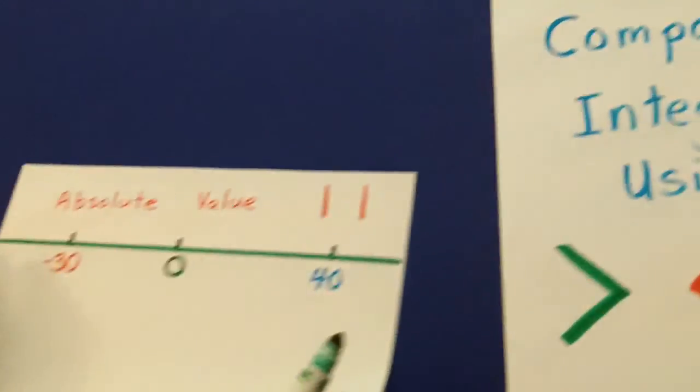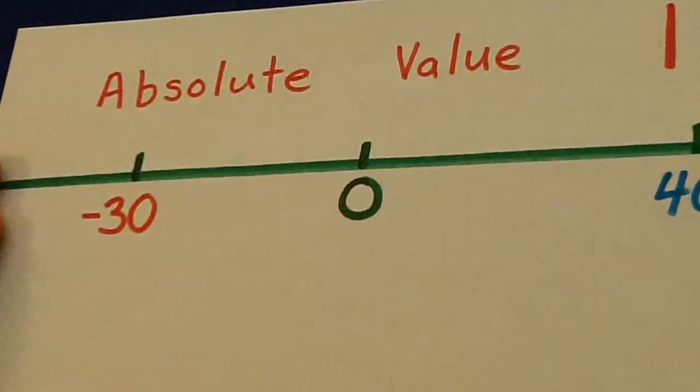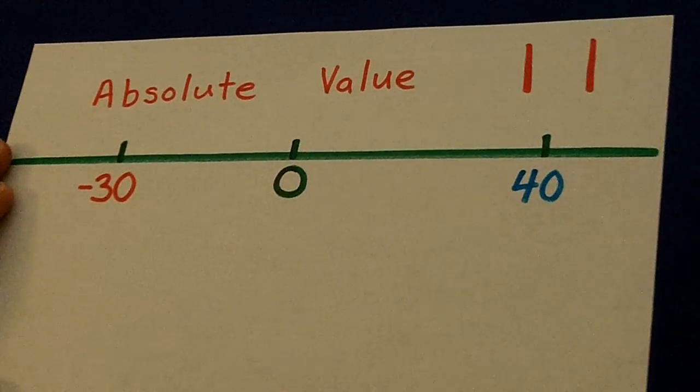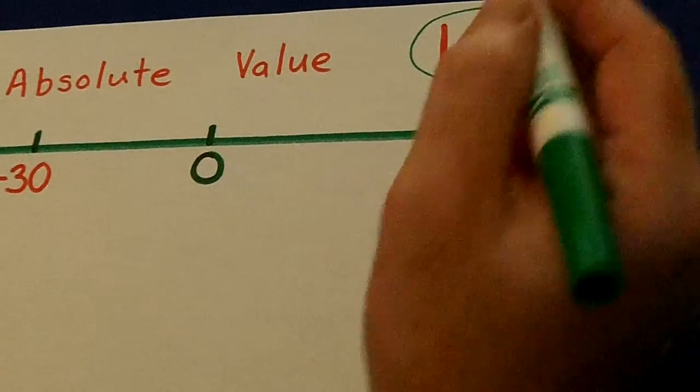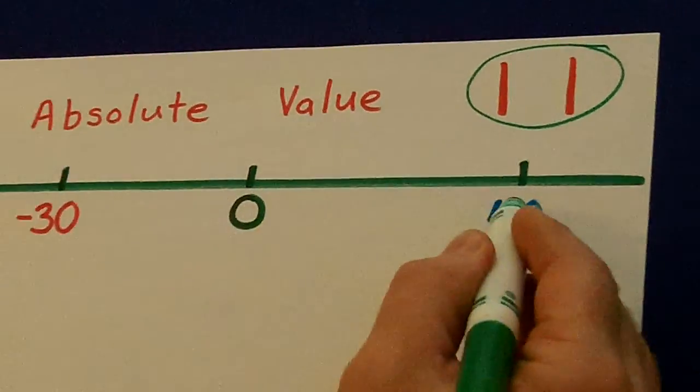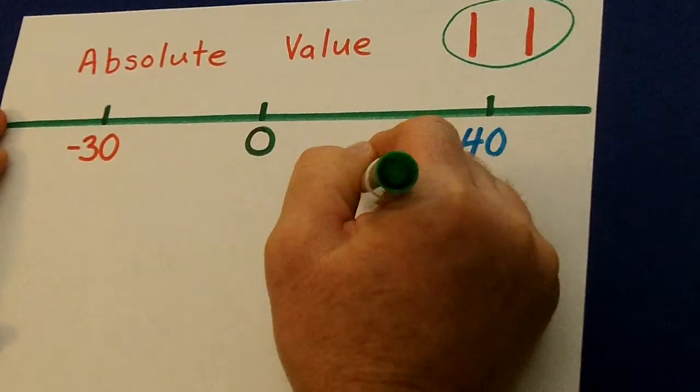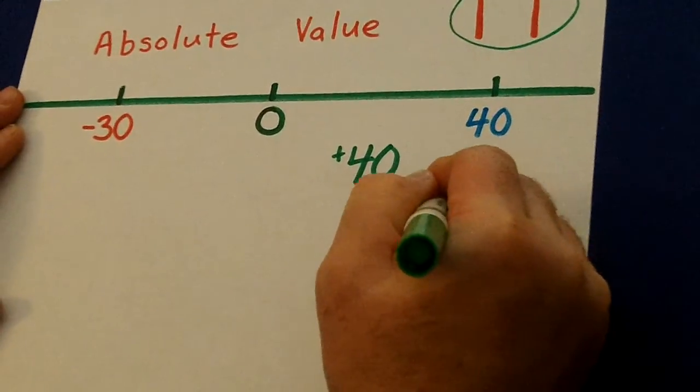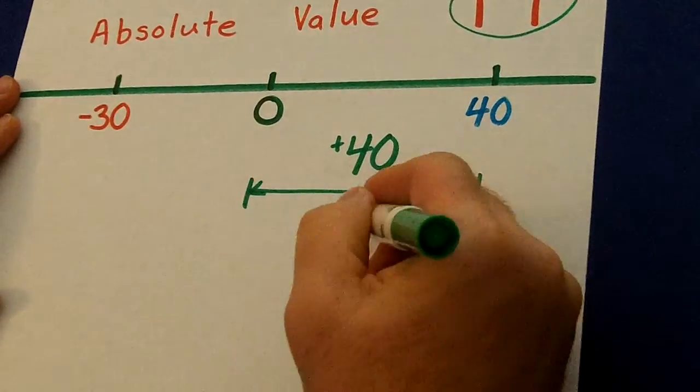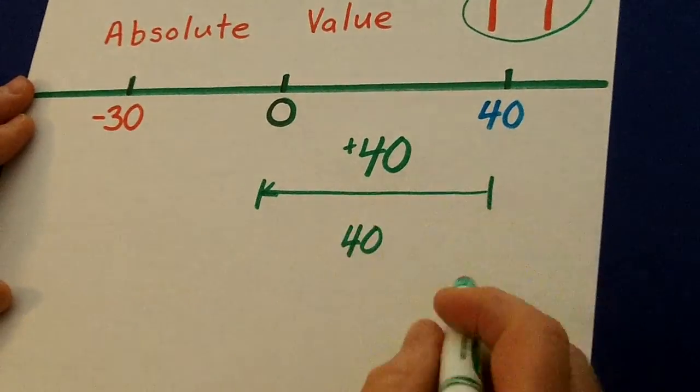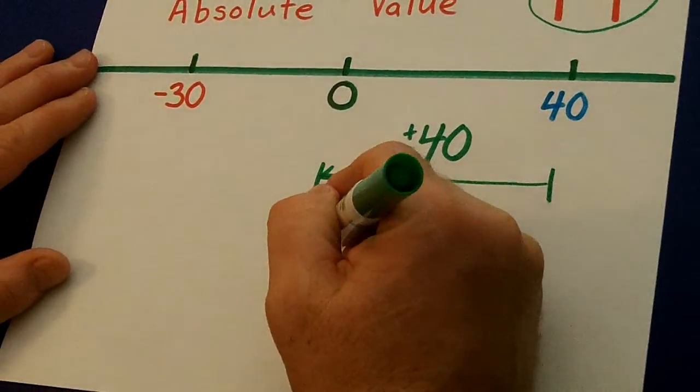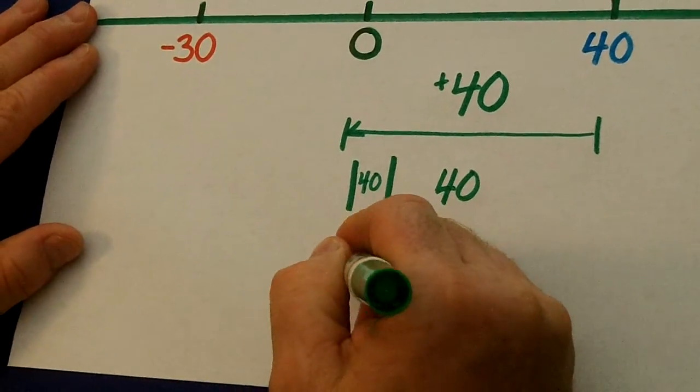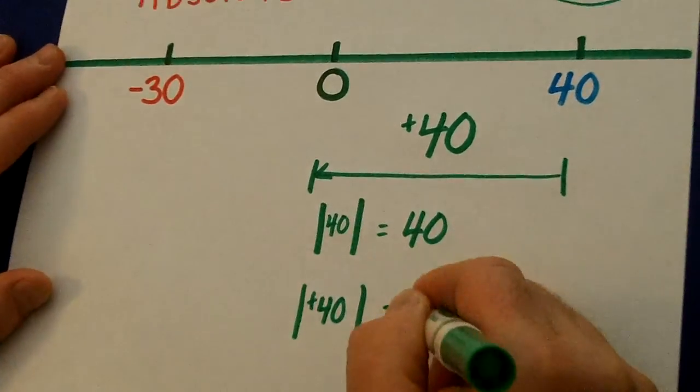Sometimes, too, we'll be asked about absolute values. And all that means, an absolute value is how far away a number is from 0. And we usually use this sign. From 0 to 40, that's a positive 40. And when we say 40 is how far from 0? It is 40 away from 0. So the absolute value of 40, or the absolute value of a positive 40, is 40.